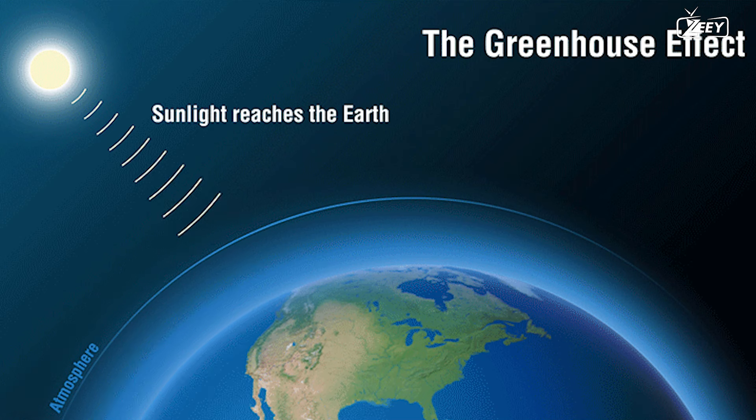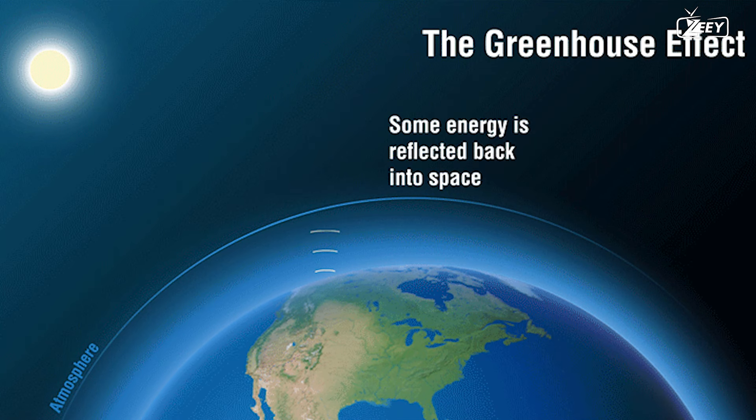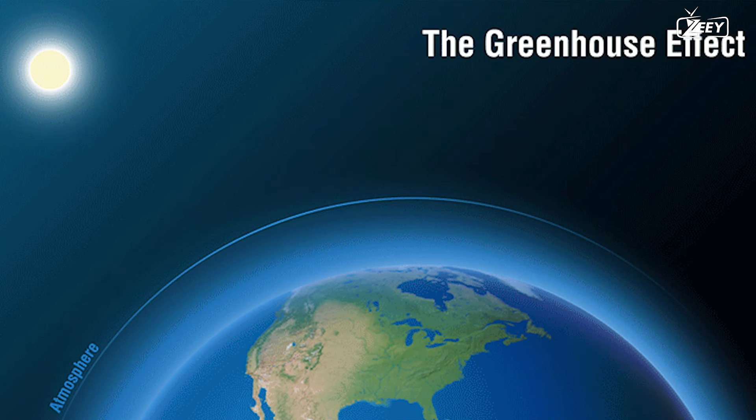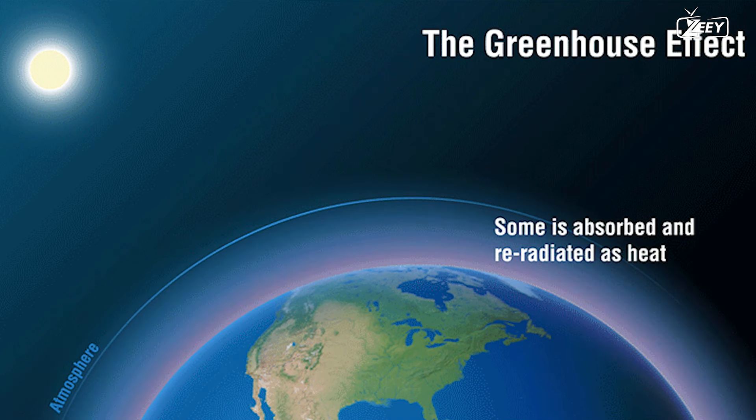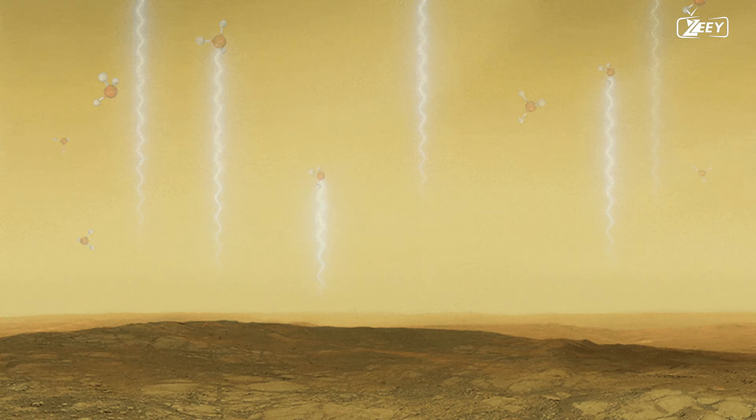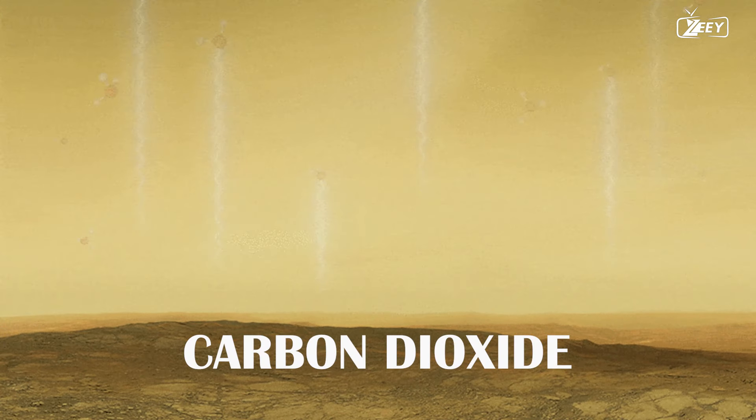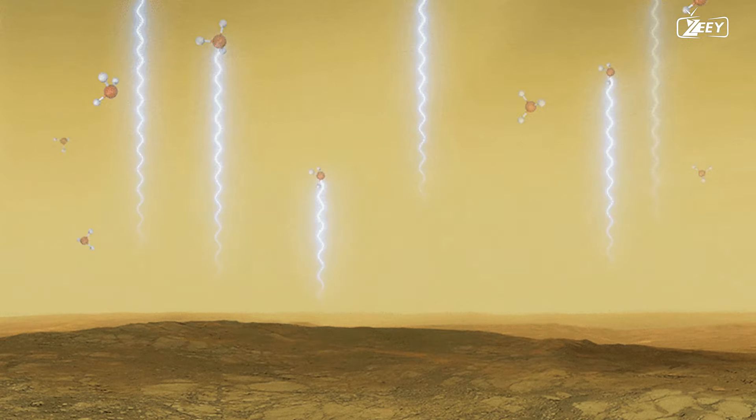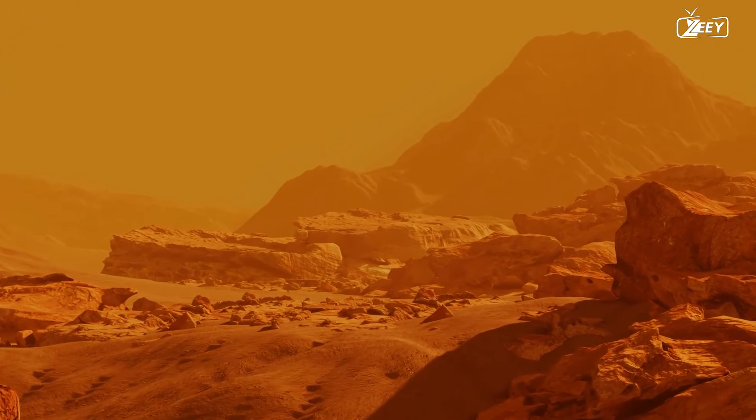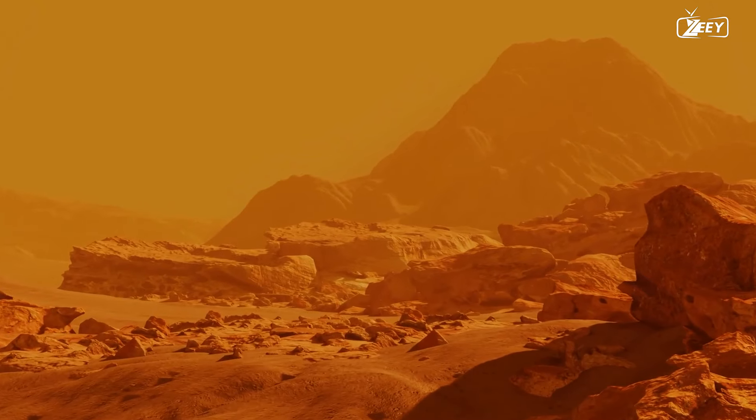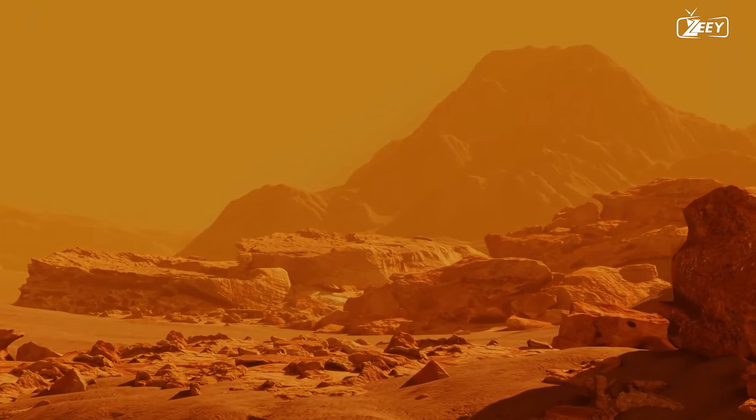The greenhouse effect happens when gases in the atmosphere of a planet capture heat from the Sun, causing the planet's temperature to rise. The thick atmosphere of Venus, which is largely composed of carbon dioxide, absorbs heat and prevents it from escaping back into space. This causes a feedback loop in which the planet's temperature continues to rise, intensifying the greenhouse effect.